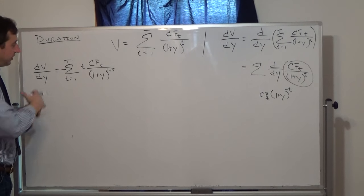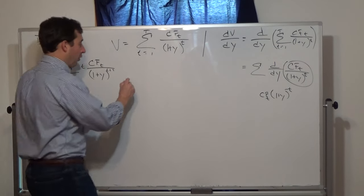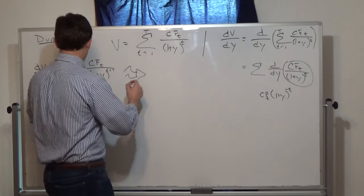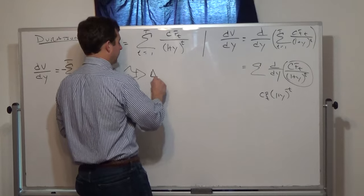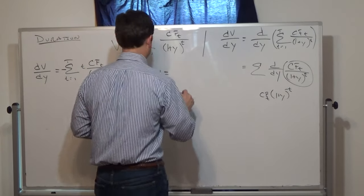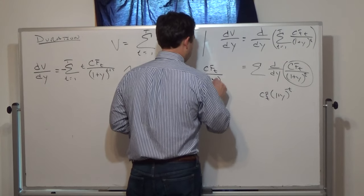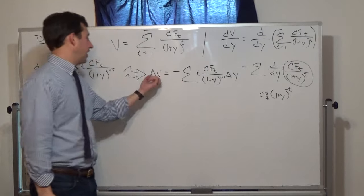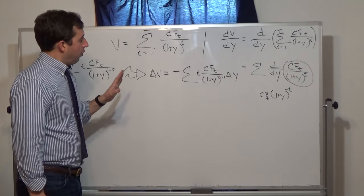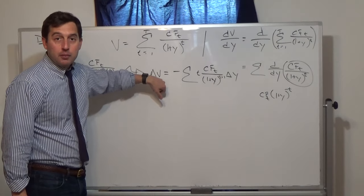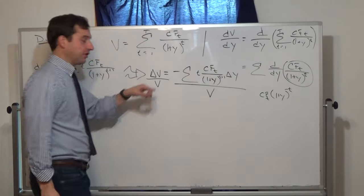So this is the derivative of the bond value with respect to the yield. When we use this in finance, we're going to make an approximation. The derivative refers to an infinitesimally small change, so approximately the change in the value of the bond is equal to negative sum over t of cash flow at time t divided by 1 plus y to the t plus 1, times delta y. So the change in the value of the bond is approximately equal to this term times the change in the yield.